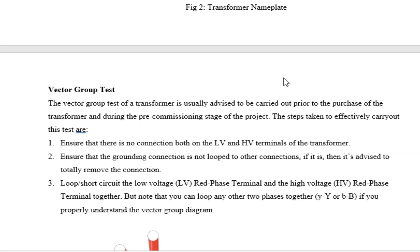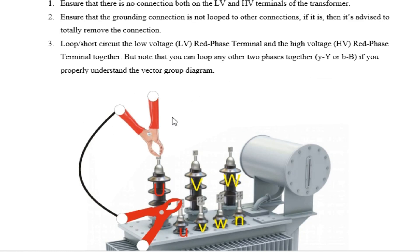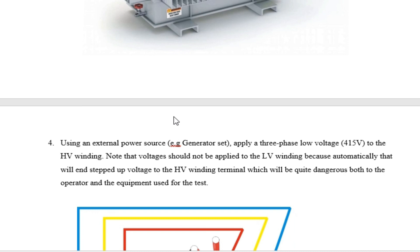What you want to do is take an identical phase of the high-voltage side and short-circuit it to the identical phase of the low-voltage side. For example, short-circuit the red phase of the high-voltage side to the red phase of the low-voltage side. On the diagram, you can see that R is short-circuited and connected to U of the low-voltage bushing, shunting those two bushings together.